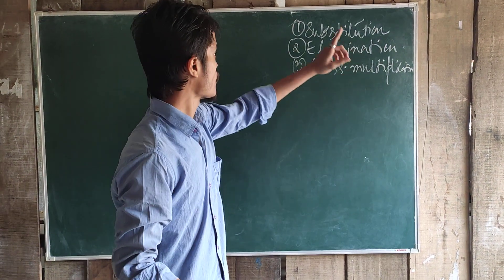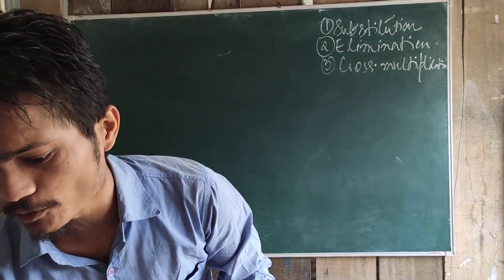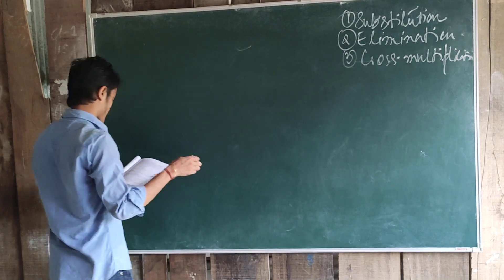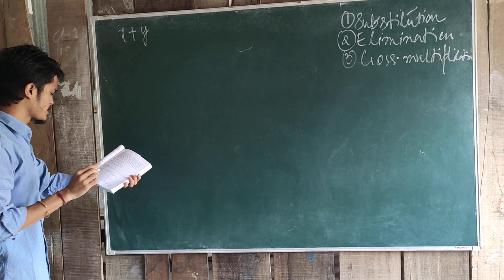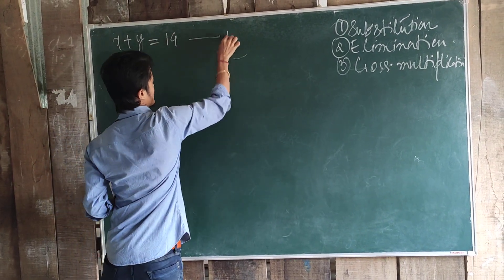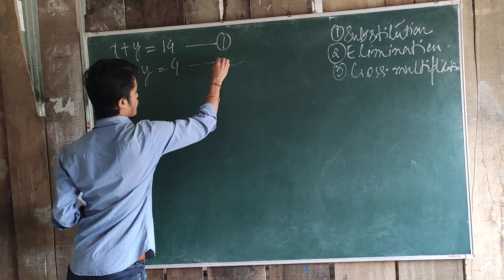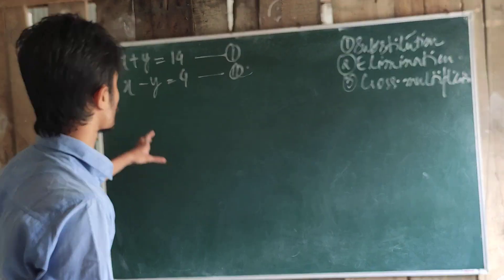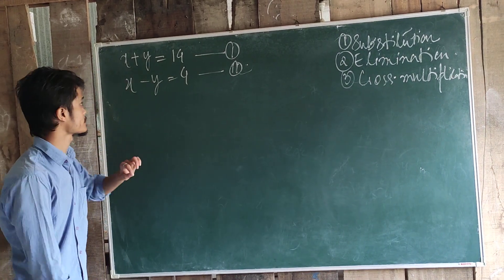We have been studying about the substitution method. So let's revise it once — how to do the substitution method. Let us do one sum to better understand it. Let us take two linear equations. Number one: x plus y equal to 14 — let us take this as equation 1. And another one: x minus y is equal to 4 — that is equation 2.